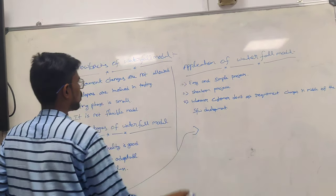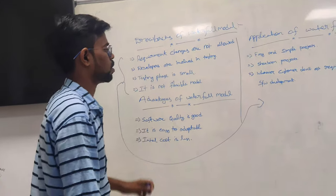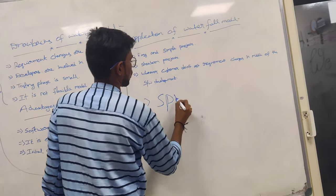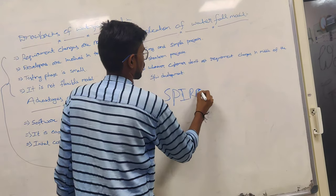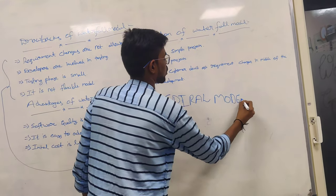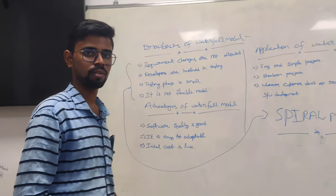How to overcome these drawbacks? Therefore we want to see spiral model to overcome the drawbacks of waterfall model.